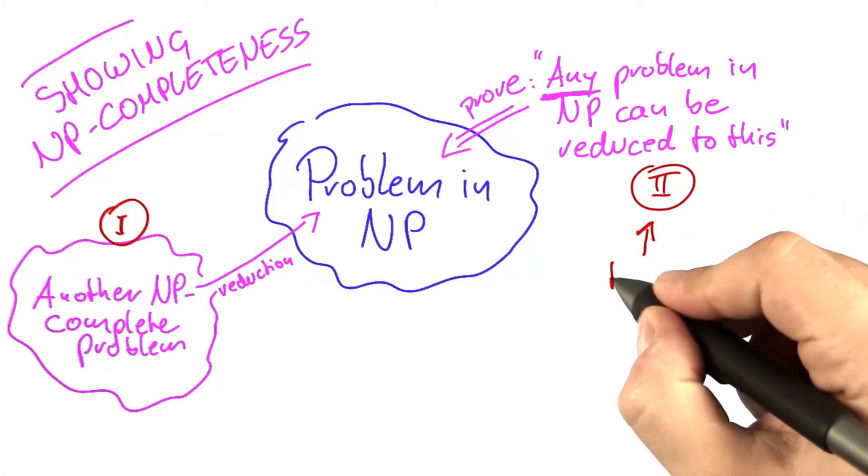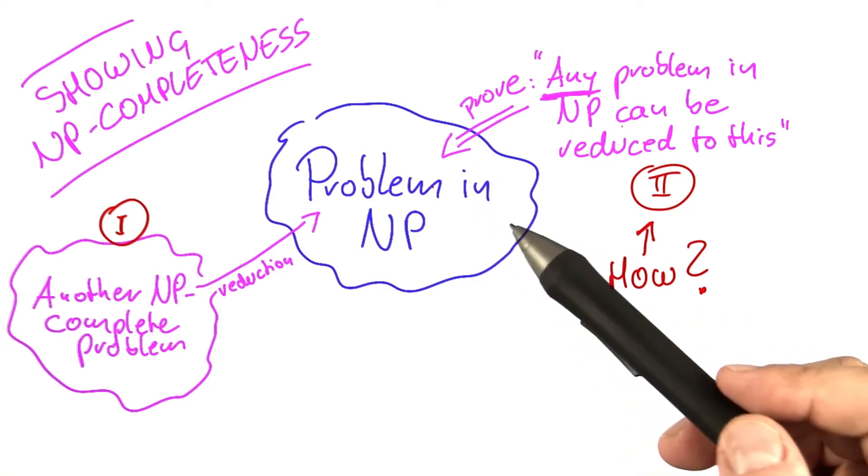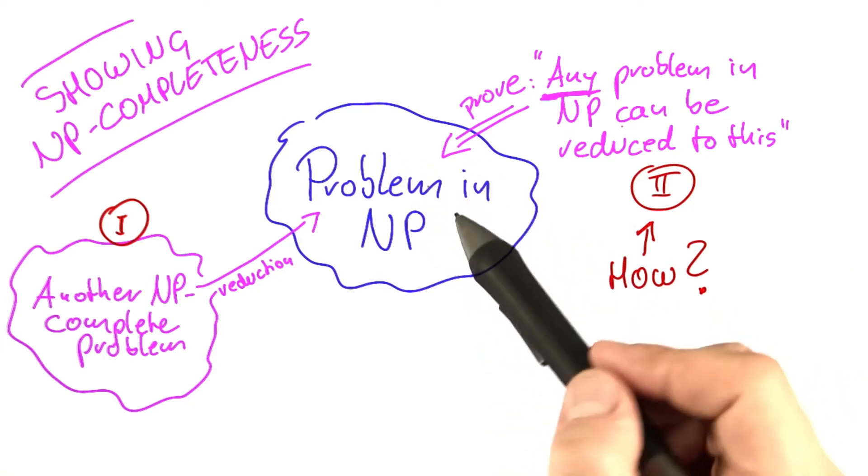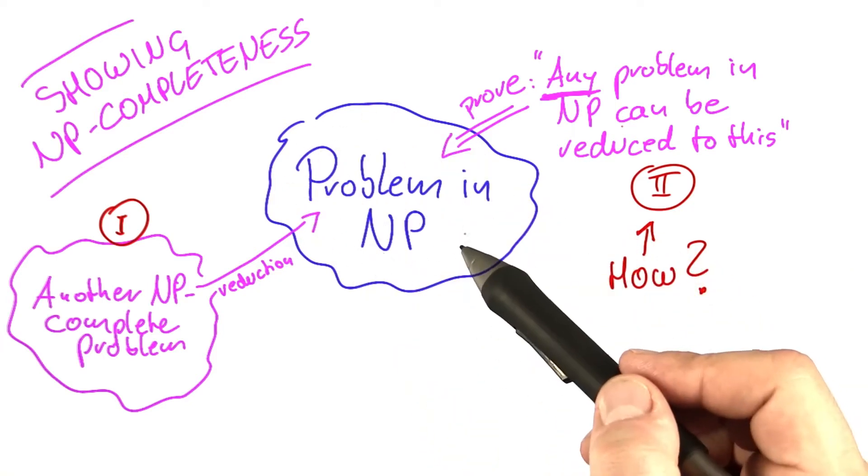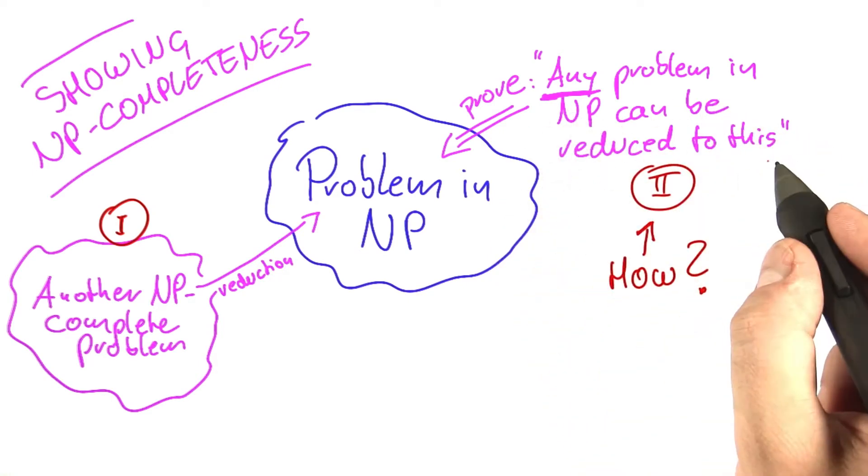So the big question is here, how on earth are we going to do this? Because this seems extremely difficult to show. We would have to find a problem for which we can prove that any other problem in NP can be reduced to it.